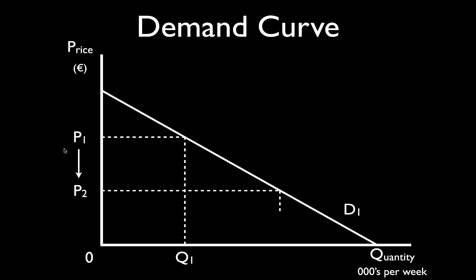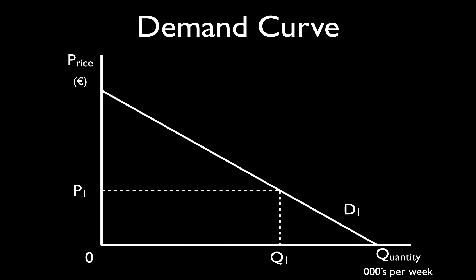If the price falls, we know from the law of demand that more will be purchased. How do we show this graphically? We go out from the new lower price P2, touch the demand curve, go down, and this gives us a second quantity Q2. The fact that Q2 is further to the right than Q1 means Q2 is a larger quantity of t-shirts. So as the price fell, consumers purchase more.